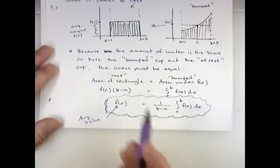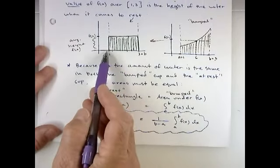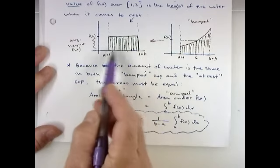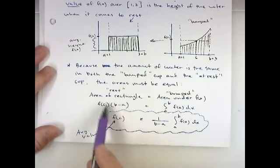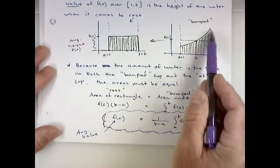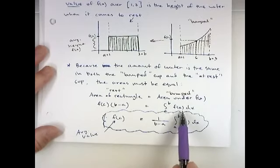What is the area of the rectangle? It's just width times height. The width in general is B minus A and the height is F of C. So the area of the rectangle is F of C times B minus A. The area under our curve from A to B, that would be given by the integral from A to B of F of X DX.